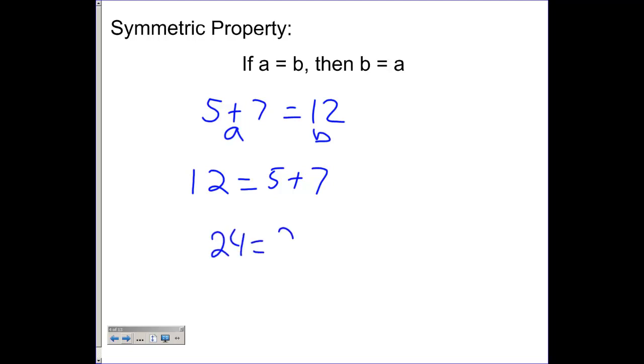24 is equal to 2n minus 6. And some people can't deal with the n being on this side. So you could use the symmetric property to rewrite that as 2n minus 6 equals 24.